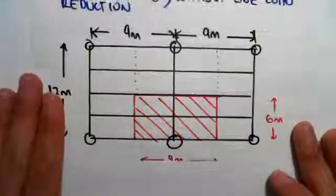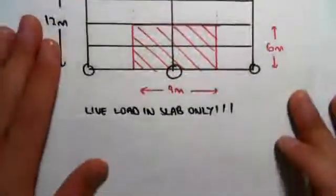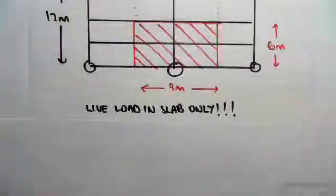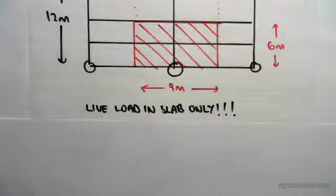This is the typical floor plan we've been looking at. Now we've always said that the live load is in the slab only, so in all the previous videos we took the live load in the slab, we then transferred that live load from the slab into the beams, whereas when we looked at permanent actions we had, say for example,